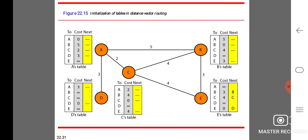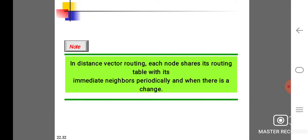Initiation of tables in distance vector routing. In distance vector routing, each node shares its routing table with its immediate neighbors periodically and when there is a change.